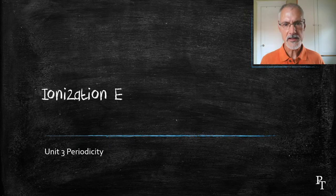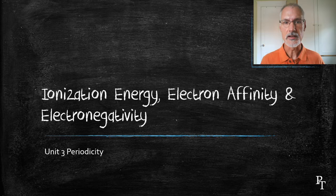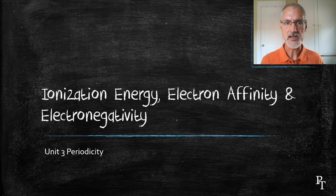Hi again. Today I want to take a look at three trends in the periodic table: ionization energy, electron affinity, and electronegativity. Let's begin with ionization energy.